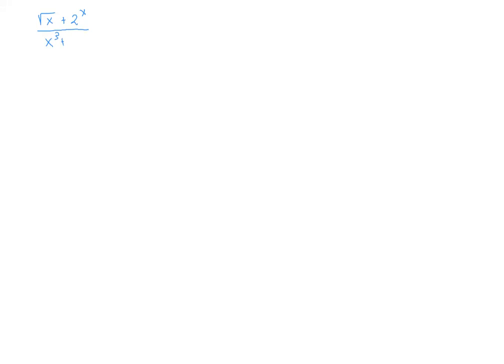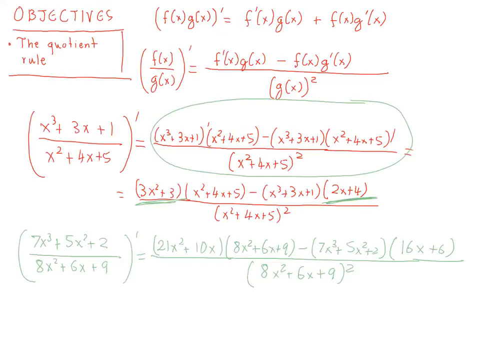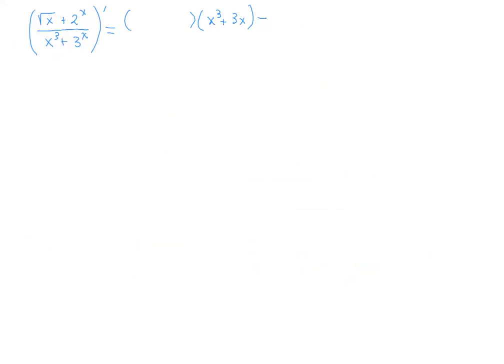Let me do an example where I apply this principle. Let's say that we want to find the derivative of √x + 2^x over x³ + 3^x. The principle I'm going to apply is that I start with the derivative of the numerator — I'll fill it in afterwards — times the denominator, which I know. Then minus the numerator times the derivative of the denominator, over the denominator squared.